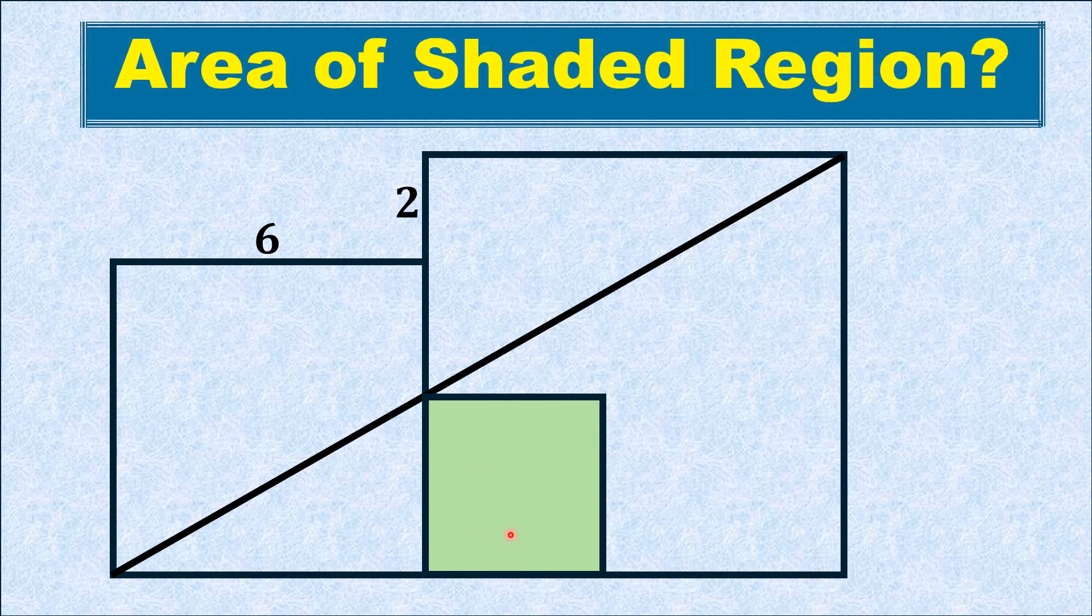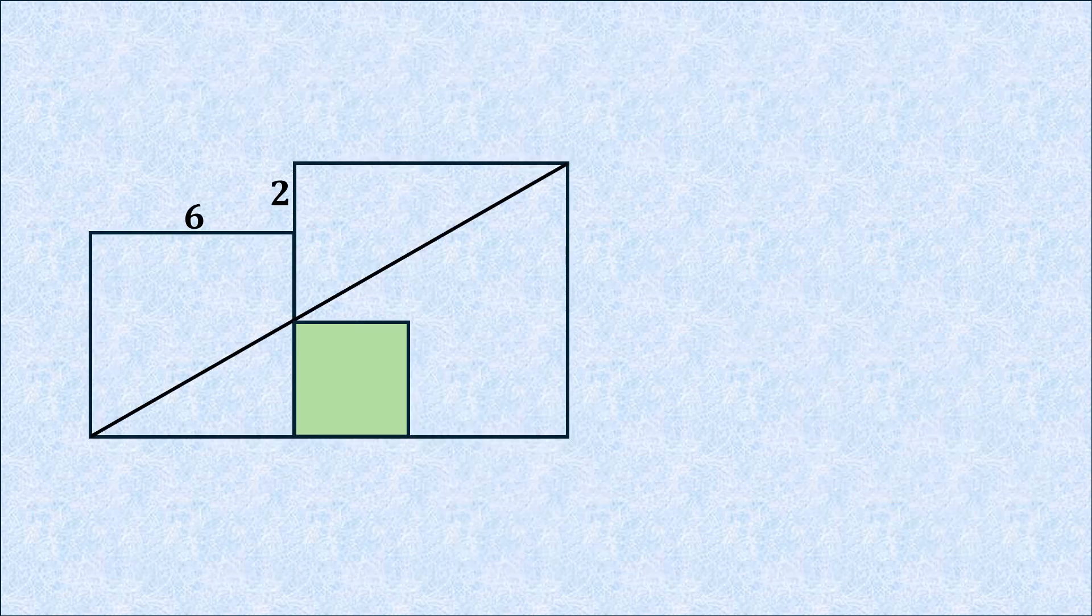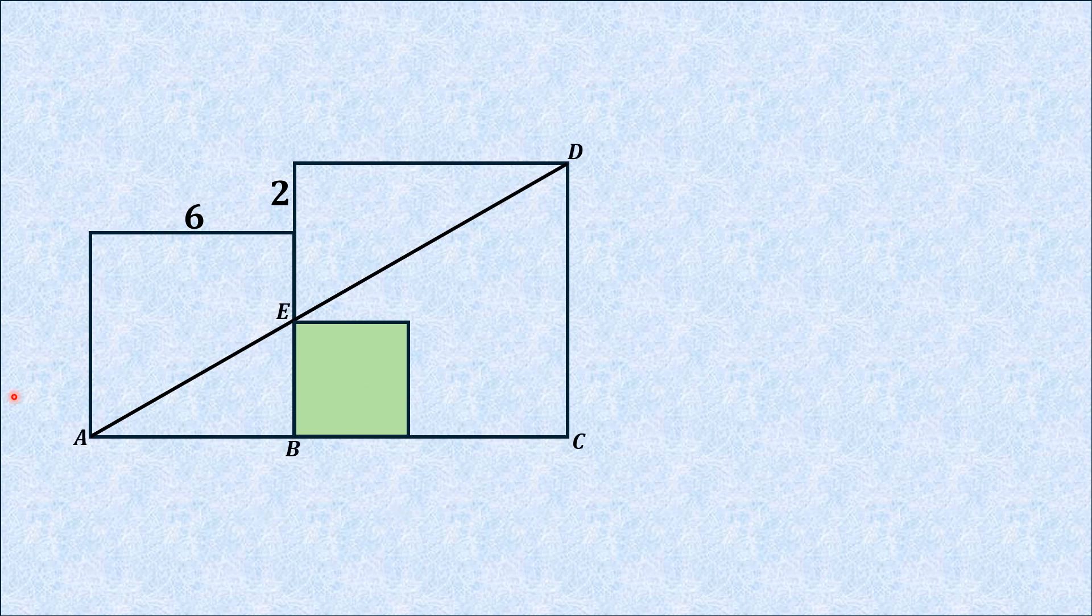Let me move towards the solution. First, we label important vertices of the figure as A, B, C, D, and E. Since the side length of one square is 6 units, and we have a length of 6 plus a distance of 2, the side length of the larger square is 8 units.